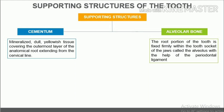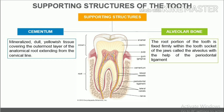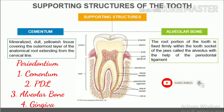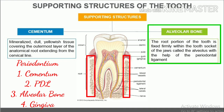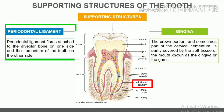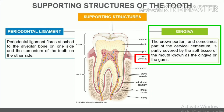Supporting structures of the tooth. The supporting structures of the teeth are collectively known as the periodontium, which helps in attaching the tooth to surrounding tissues as well as allowing the sensation of touch and pressure. The periodontium consists of cementum, periodontal ligament, alveolar bone, and gingiva. The root portion is fixed firmly within the tooth socket of the jaws called the alveolus with the help of the periodontal ligament. Periodontal ligament fibers attach to the alveolar bone on one side and the cementum of the tooth on the other. The crown is partly covered by the soft tissue of the mouth known as the gingiva or gums.